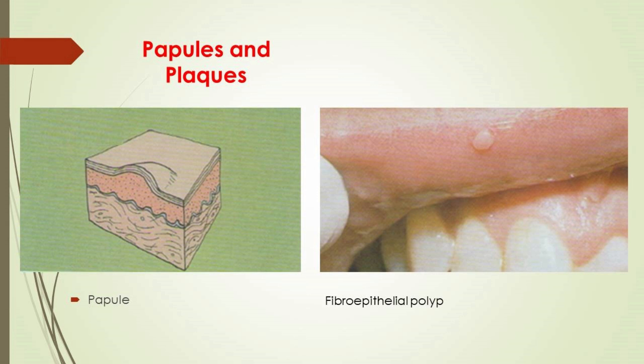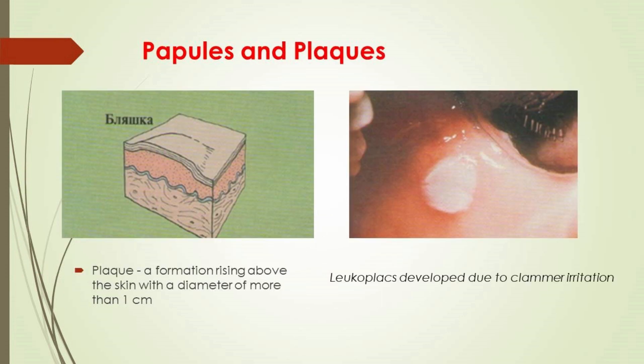On the picture you can see a fibroepithelial polyp resulting from chronic irritation. A plaque is a formation rising above the skin with a diameter of more than 1 cm. Plaques develop due to chronic irritation.